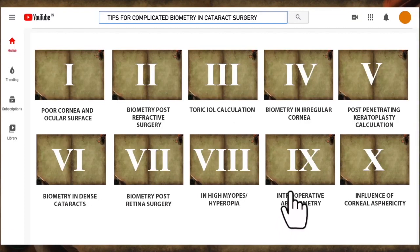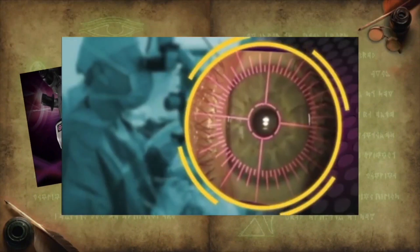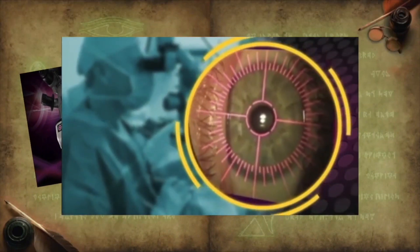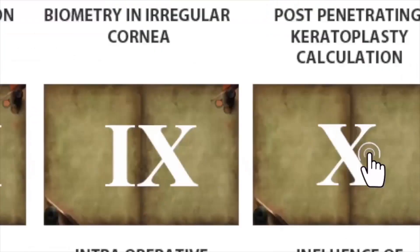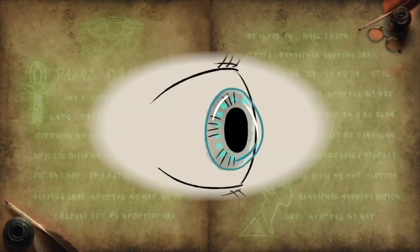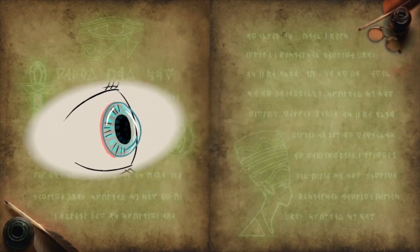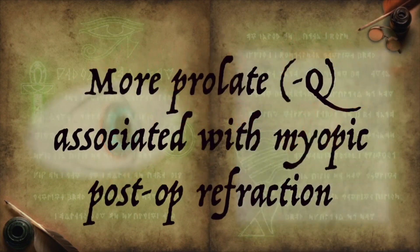Intraoperative biometry is the next big thing. It gives us the opportunity to double-check preoperative findings intraoperatively. Lastly, corneal asphericity must also be taken into consideration as it affects postoperative outcomes. The more prolate the cornea, the more it is associated with negative prediction error.